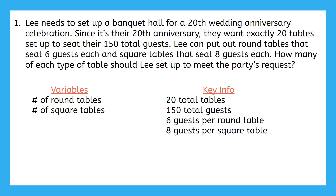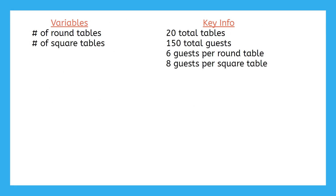Let's summarize all of our key information. We know he needs to use 20 total tables, there are 150 total guests, round tables seat six guests each, and square tables seat eight guests each. Before we try to write any equations, do you think we'll be working in slope-intercept form or standard form in this problem? There's no starting point here — it's not like there are already any tables out — so I don't think I'm going to be writing equations in slope-intercept form. And that means our equations must be in standard form. That means it doesn't matter which variable is which, so I'll make the number of round tables my x variable and the number of square tables my y variable.